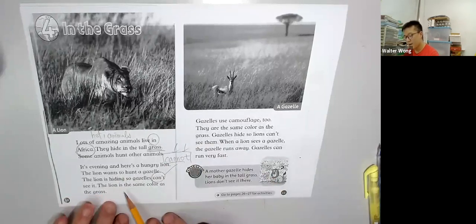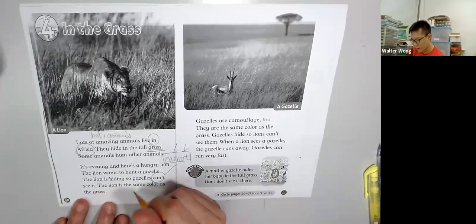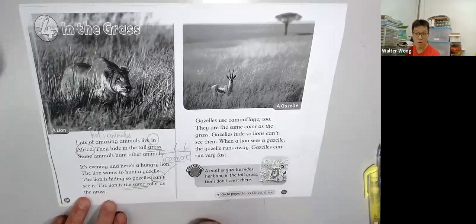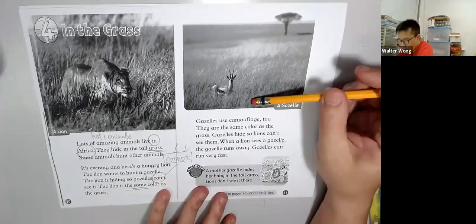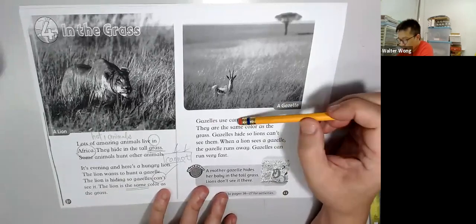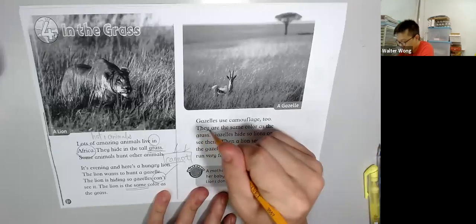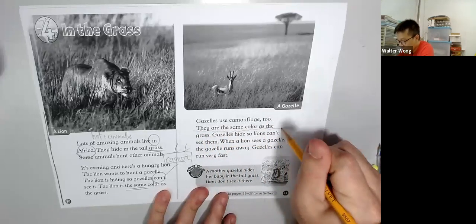The lion is the same color as the grass. 用得的 Same. Gazelles use camouflage, too. They are the same color as the grass. 他們的顏色是有點醜的 Same color as the grass.